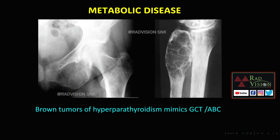Metabolic diseases such as hyperparathyroidism with brown tumors can also mimic GCT or ABC.